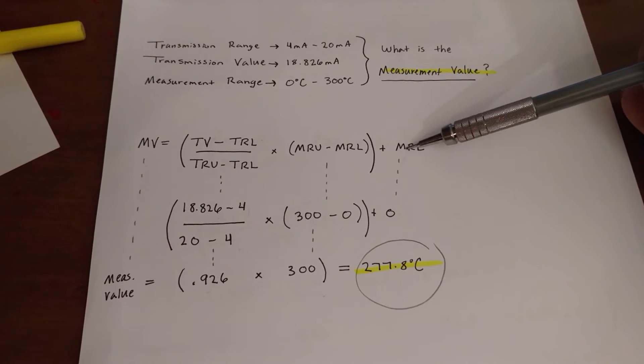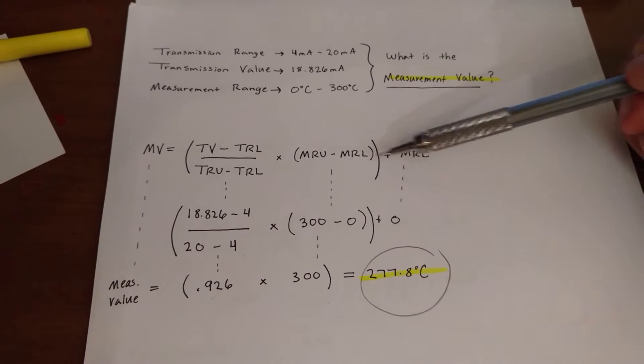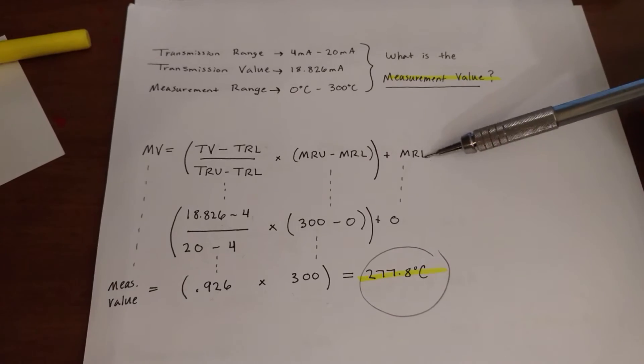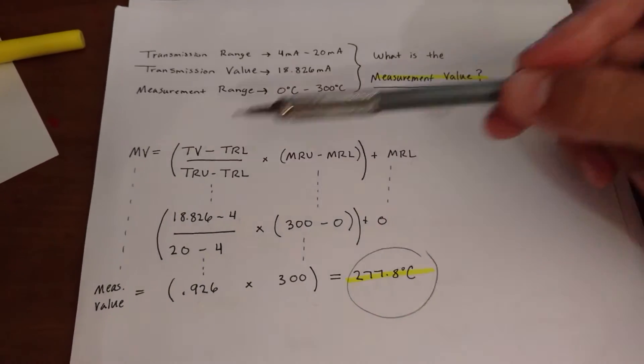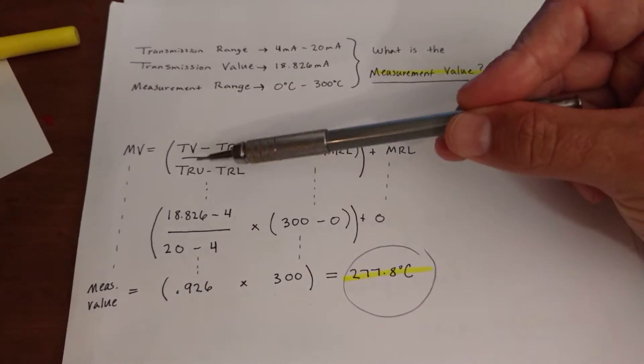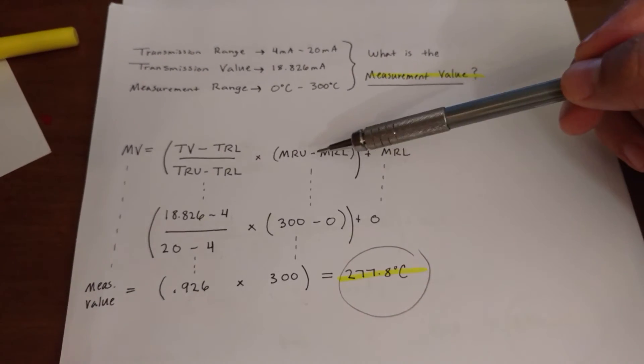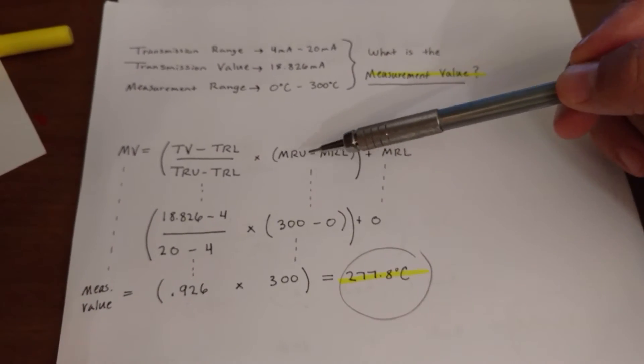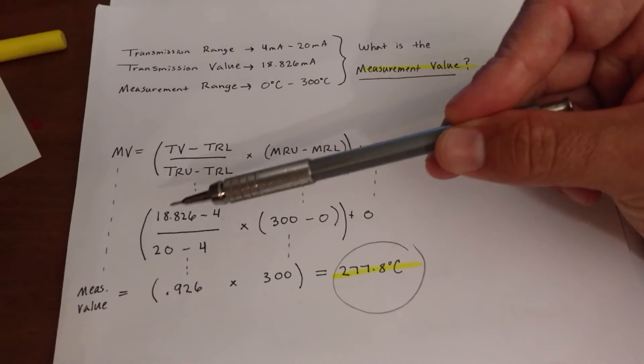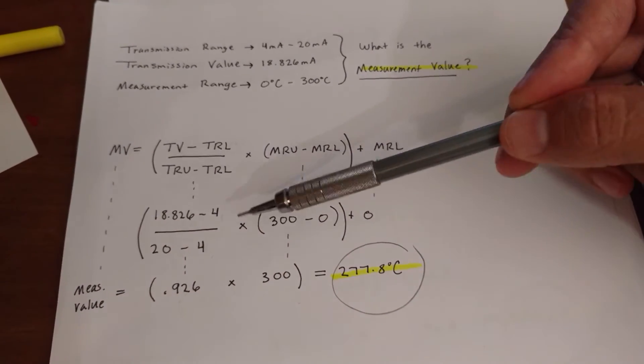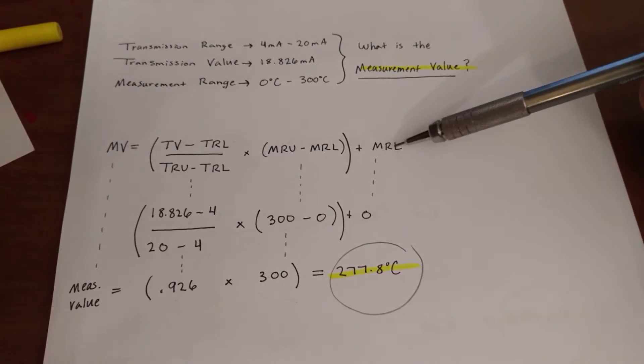But it's important to know that if this was, you know, a higher number than 0, you can't just cancel this out right here because of this bracket. Because you're going to have to multiply whatever this number is here from this division and this here from this subtraction. And you're going to get a number and you're going to add whatever that number is to this measurement range lower value.